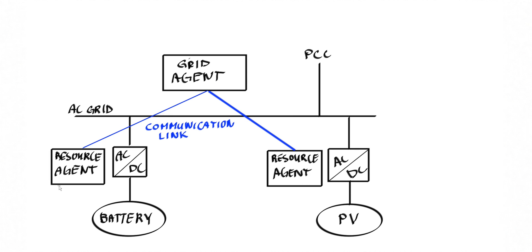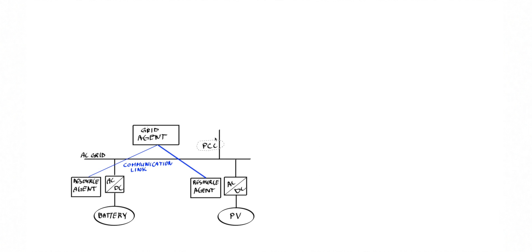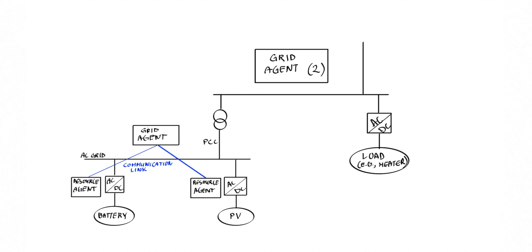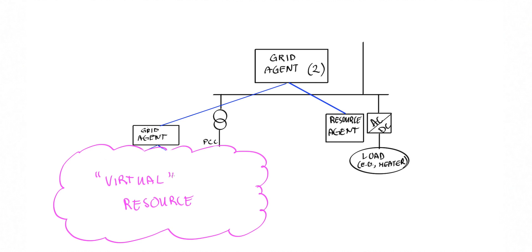The second principle is composability, by which we mean that a grid agent can aggregate the collection of resources that it controls, including the relevant part of the grid, and make it appear as a single virtual resource. This virtual resource can be controlled by a higher-level grid agent, just like any other resource. The composability property makes it possible to divide the overall control problem into smaller, local control problems, which are easier to deal with.